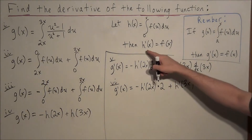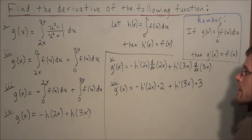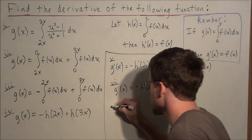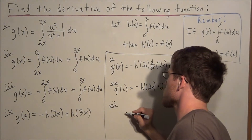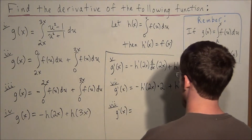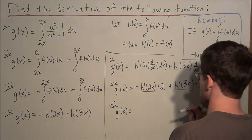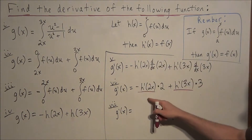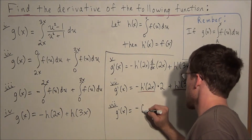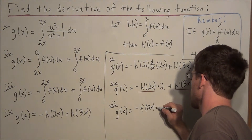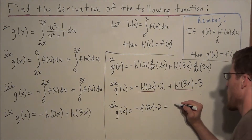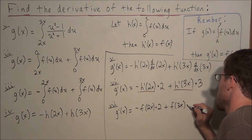Now the key result: we said h prime of x equals f of x. So we can replace h prime of 2x with f of 2x and h prime of 3x with f of 3x. This gives us g prime of x equals negative f of 2x times 2, plus f of 3x times 3.